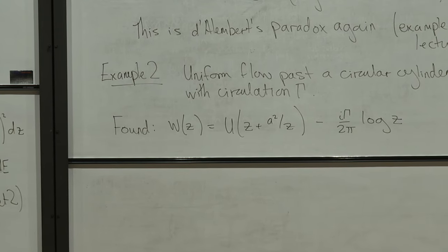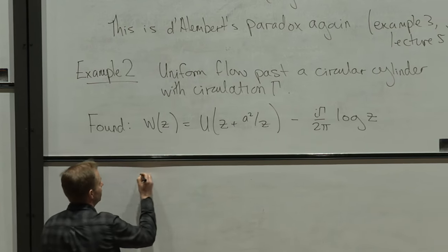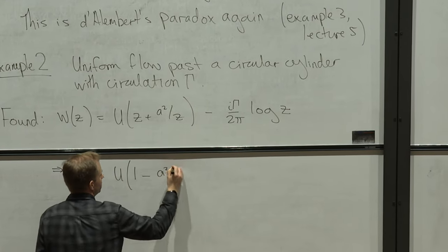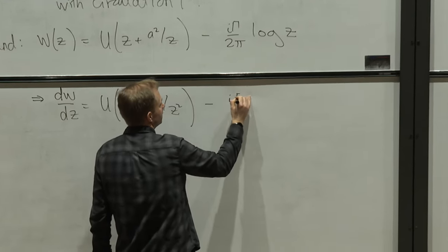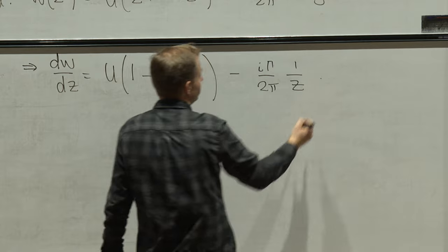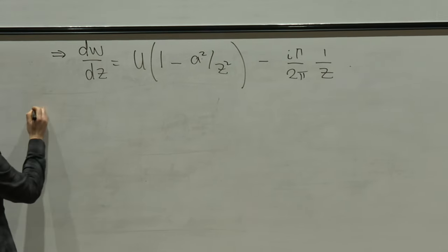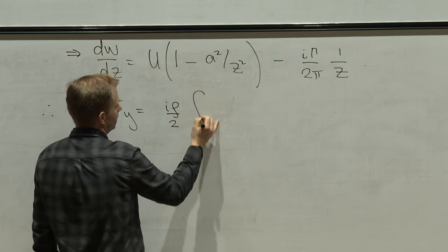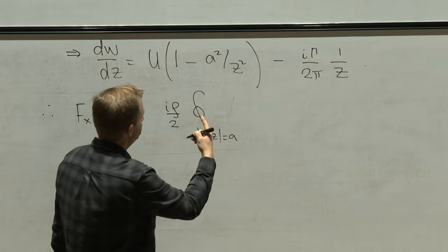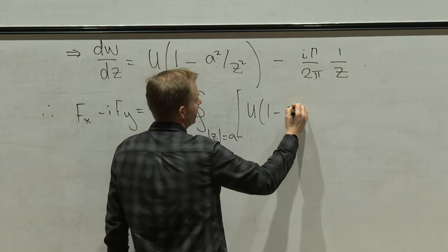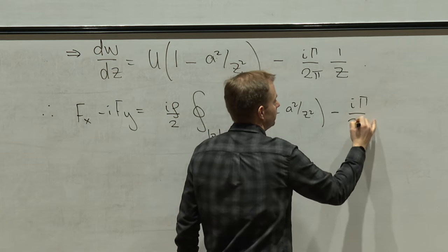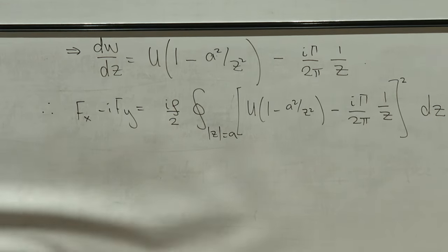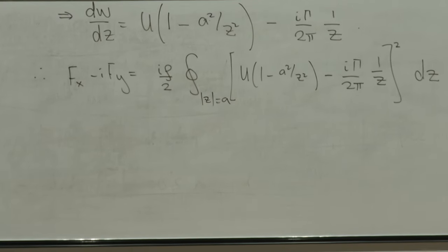The complex potential we found in Wednesday's lecture was w(z) = Uz + a²/z minus i·gamma/(2·pi)·log(z). The reason we can't rule this out is because the contribution from this point vortex essentially decays in the far field, and it still has |z| = a as a streamline. Differentiating gives dw/dz = U(1 minus a²/z²) minus i·gamma/(2·pi) · (1/z). From Blasius' theorem, F_x minus i·F_y equals i·rho/2 times the contour integral of (dw/dz)² dz.